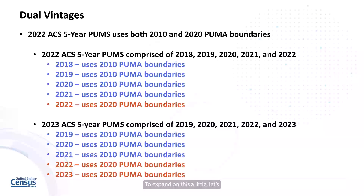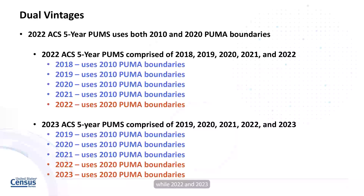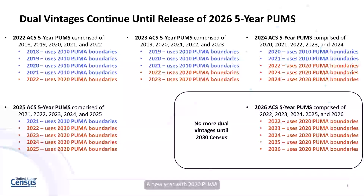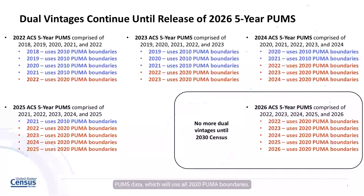To expand on this, let's look at the 2023 ACS five-year PUMS, which encompasses data running from 2019 through 2023. For this set of five-year data, 2019, 2020, and 2021 use the 2010 PUMA boundaries, while 2022 and 2023 use the 2020 PUMA boundaries. A new year with 2020 PUMA boundaries will get added, and an old year with 2010 PUMA boundaries will get dropped with each successive release of five-year PUMS data. This will continue until the release of the 2026 ACS five-year PUMS data, which will use all 2020 PUMA boundaries.